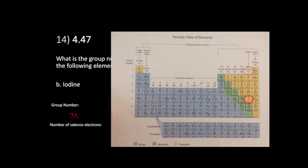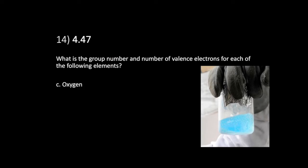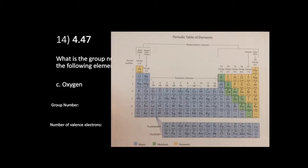How about iodine? Iodine is on the bottom right of the periodic table; it's in group 7A. The number of valence electrons is the same as the group A number, so iodine has seven valence electrons. That means an iodine atom would have seven bumps, determining how it can connect to other atoms.